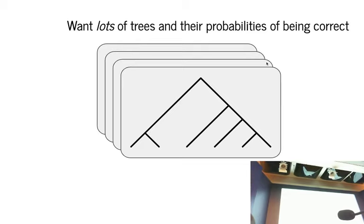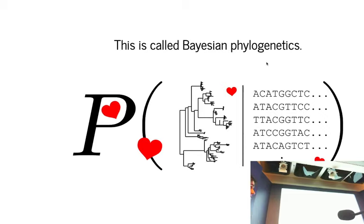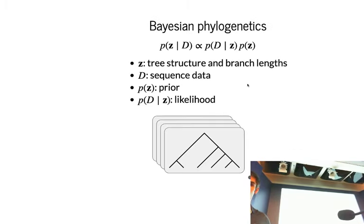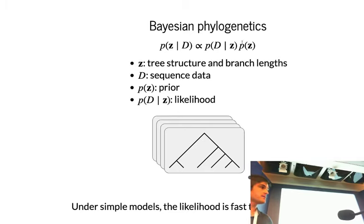Of course, what we want is lots of trees and their probabilities of being correct. This is called Bayesian phylogenetics, which is a topic that I love very deeply. In Bayesian phylogenetics you have some tree, some data that you are conditioning on, and you're trying to evaluate a probability distribution on the trees. This is our classic Bayes rule setup, where we have our posterior which is proportional to our likelihood times our prior. The likelihood is fast to evaluate under simple models.